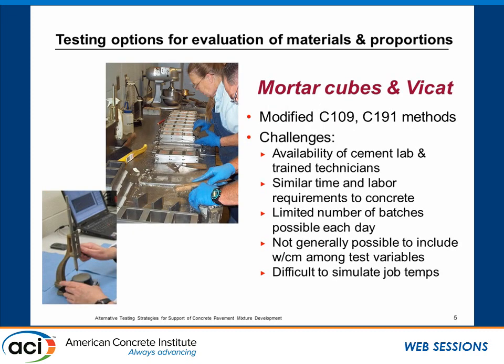Here's an alternative if you have a cement lab. You can run mortar cube batches and VICAT testing for setting trends, and it works quite well — you can use the actual chemical admixtures. Some challenges remain: you haven't reduced time and labor requirements much, you still have a limited number of batches per day, and it's not generally possible to vary the water-cementitious ratio in mortar cubes because you have to make those according to a constant flow. There are also challenges simulating job temperatures with mortar cubes.